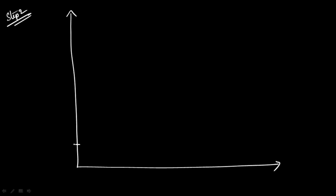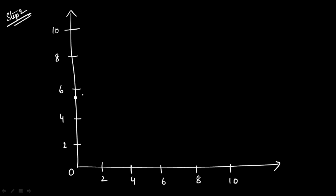I'll mark the axes: 0, 2, 4, 6, 8, 10 — going up to 10 since the maximum is 8. The first point (0, 5.33) goes here on the y-axis, and (8, 0) goes here on the x-axis. Let's draw the first constraint line.